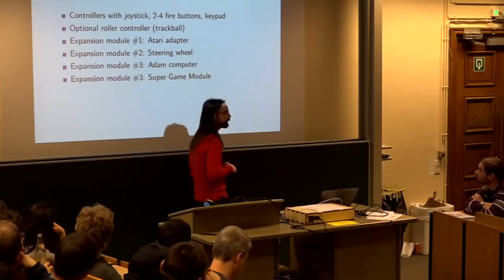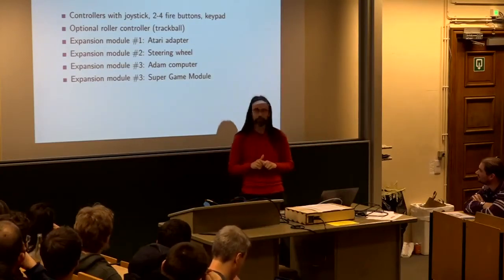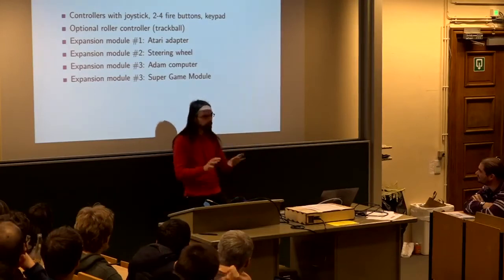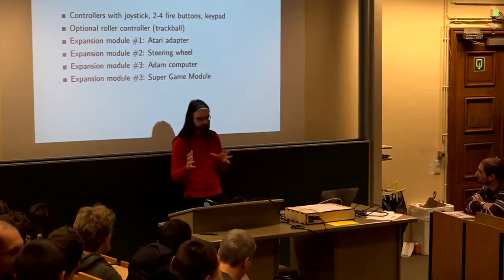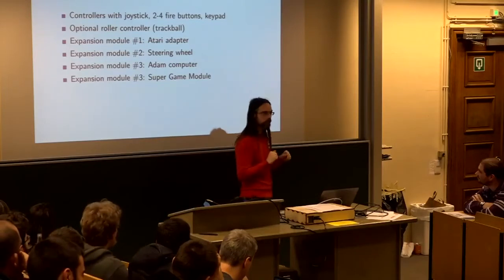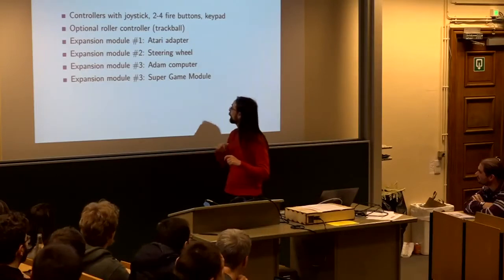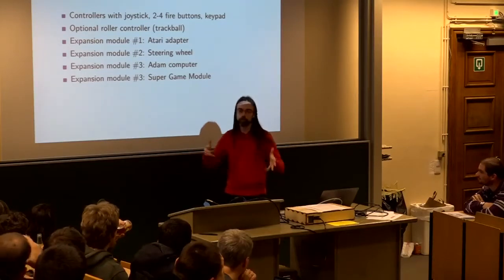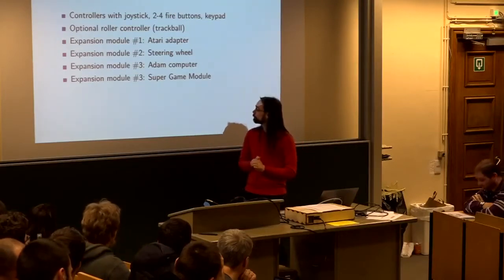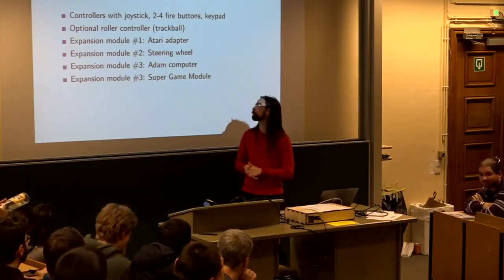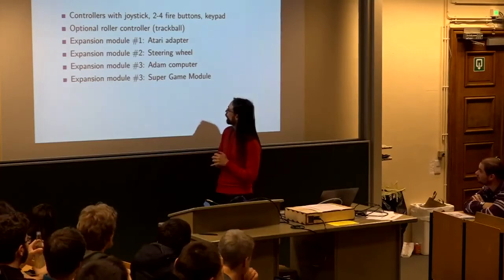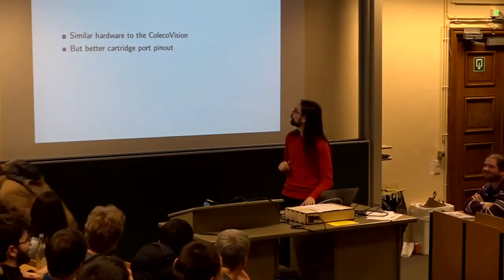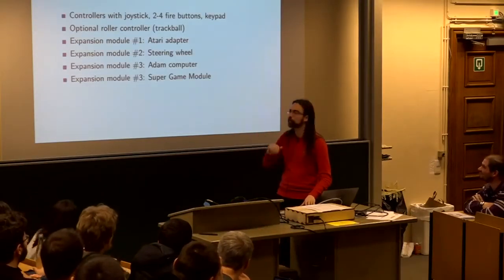There are various expansion modules. One was an adapter to plug in Atari cartridges. Then came a steering wheel for racing games. They announced an expansion module 3 — a super game module with some kind of optical disk to bring real video and lots of storage to the system. Apparently prototypes existed, but then they pivoted to making it into a computer with a keyboard and printer. The community later created their own super game module with a better graphics chip and some extra RAM. The original manufacturer went bankrupt in the 1980s.